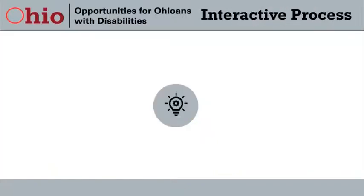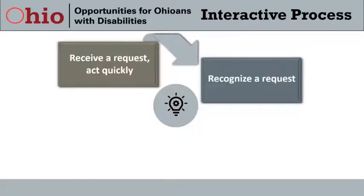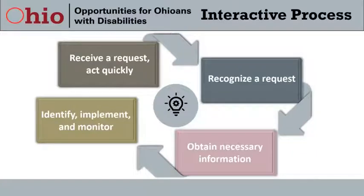When an employer receives a request, they are expected to act quickly and begin the interactive process to identify the need for the accommodation and an effective solution. Navigating the interactive process during a pandemic is generally the same as when there is no pandemic, and the steps include recognizing a request for an accommodation, obtaining the necessary information, and then identifying, implementing, and monitoring the reasonable accommodation.